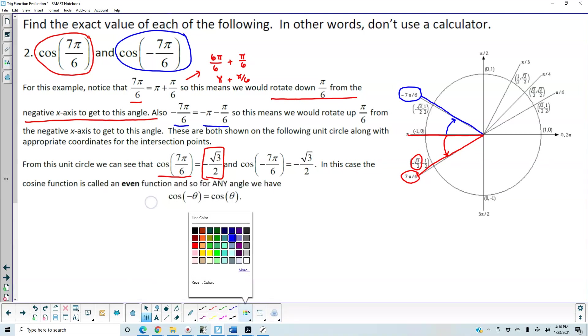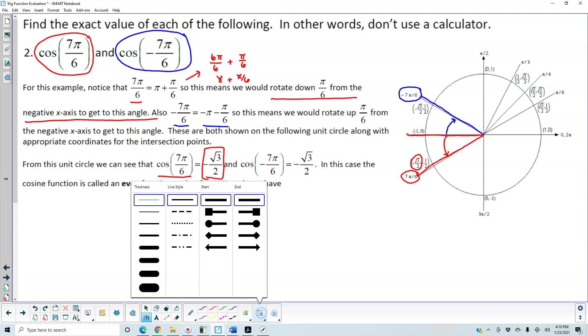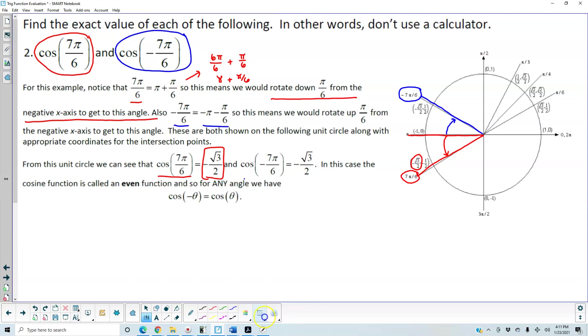And then we want to find the cosine of negative 7π over 6. And again, that is going to be the x-coordinate of that angle, which is negative square root of 3 over 2.